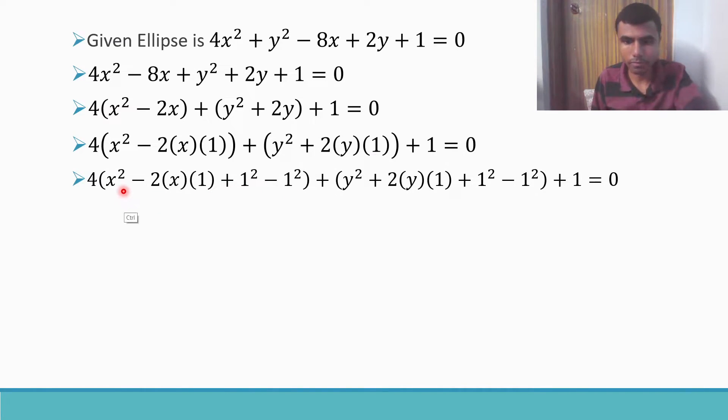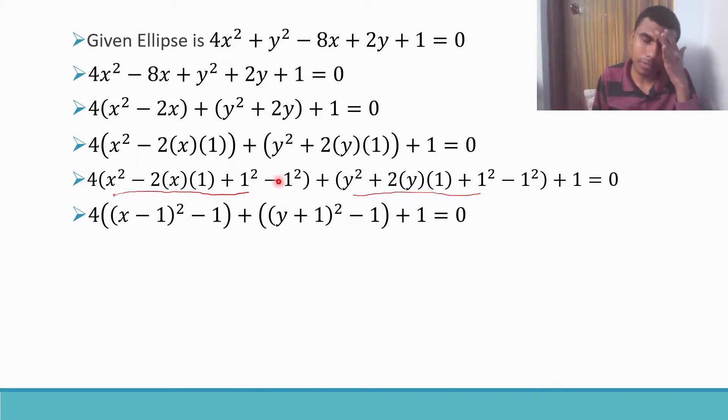Here I have x² - 2·x·1, so I just need to add and subtract 1². Here also, I just need to add and subtract 1². I'm adding this inside the bracket. If you see, these three terms make x - 1 whole square because it is like a² - 2ab + b². Likewise, these three terms make y + 1 whole square. And then this -1² is -1, here also -1² is -1.